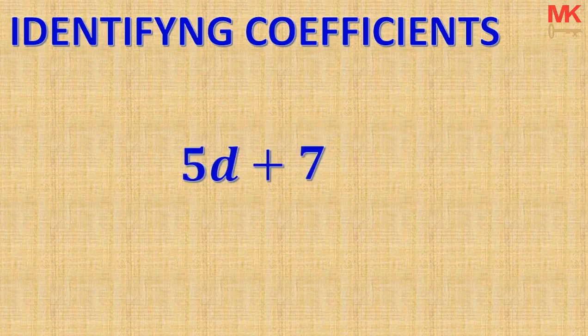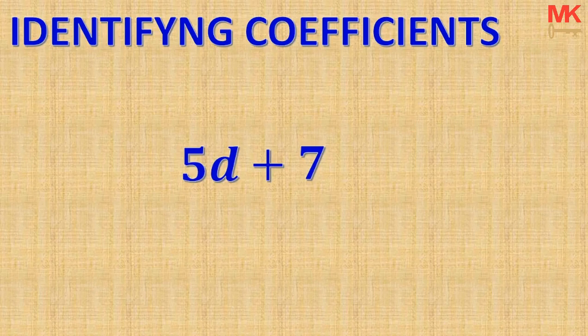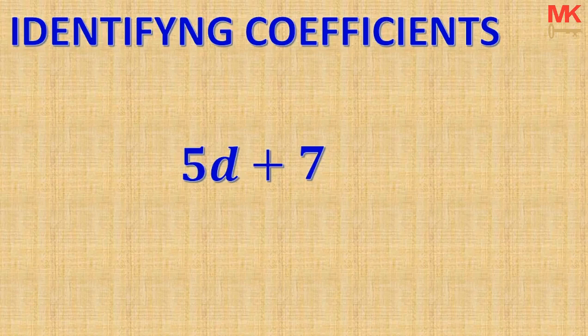Supposing we have the expression 5D plus 7 and you are asked to find the coefficients in this expression. First of all, coefficients are always associated with letters. In this case, there are two terms: 5D and positive 7. The positive 7 is a constant term and we do not have anything to do with it since it is a constant term.